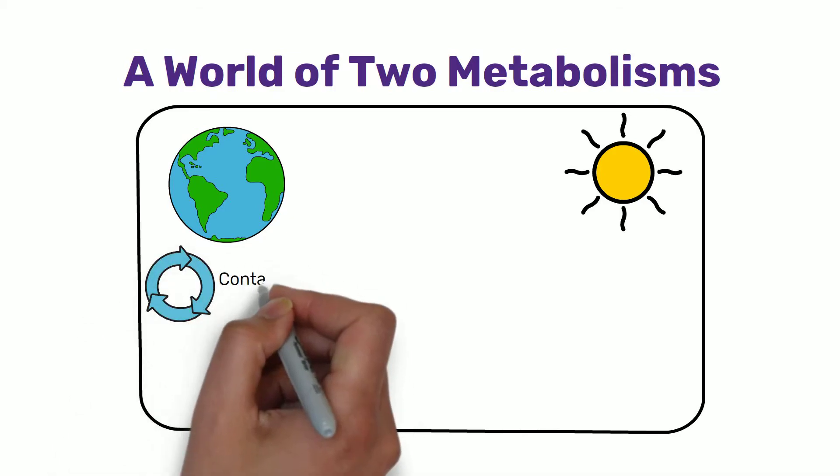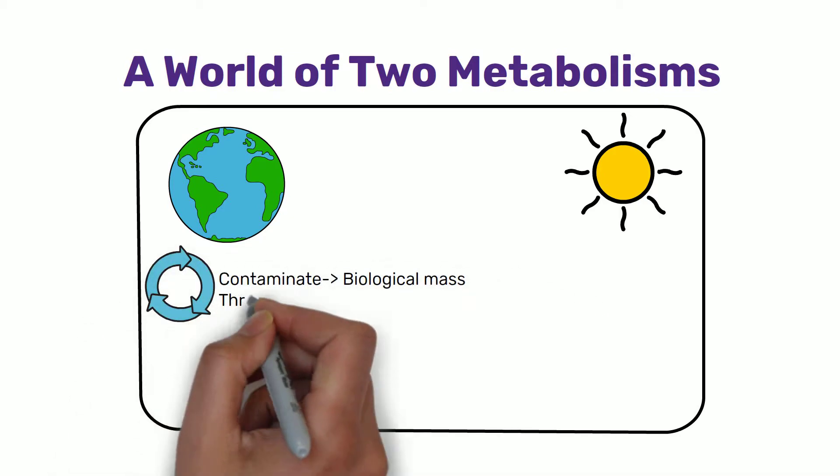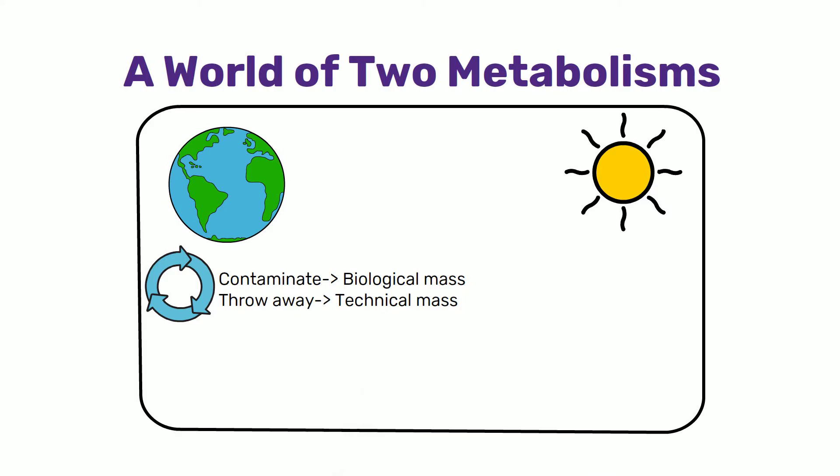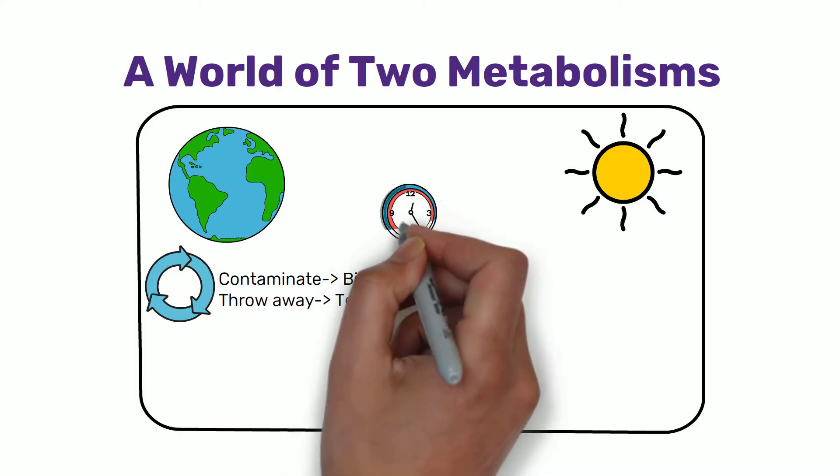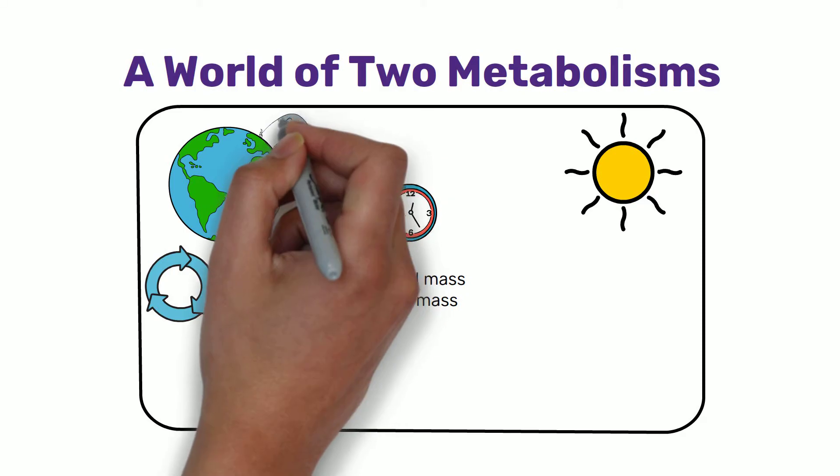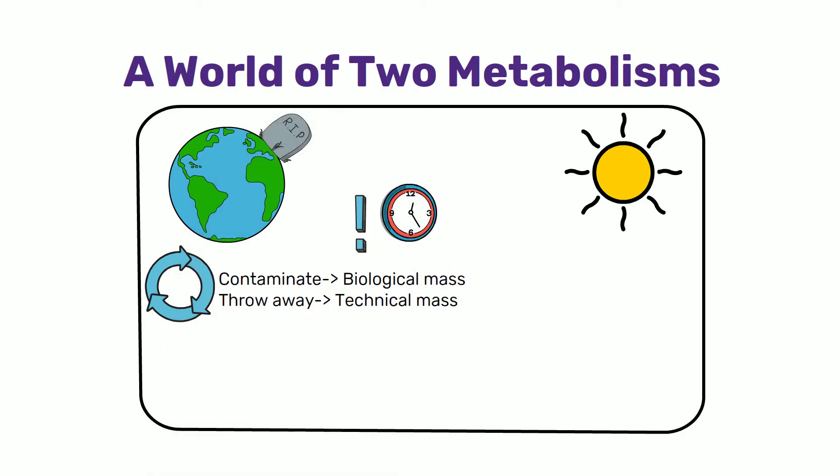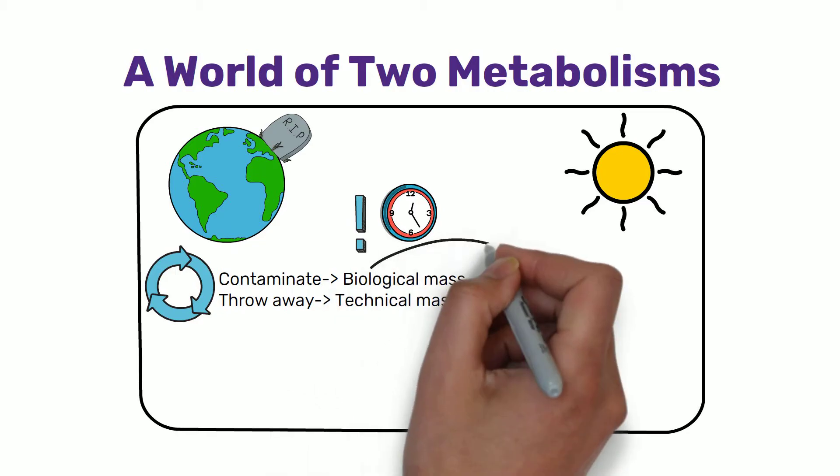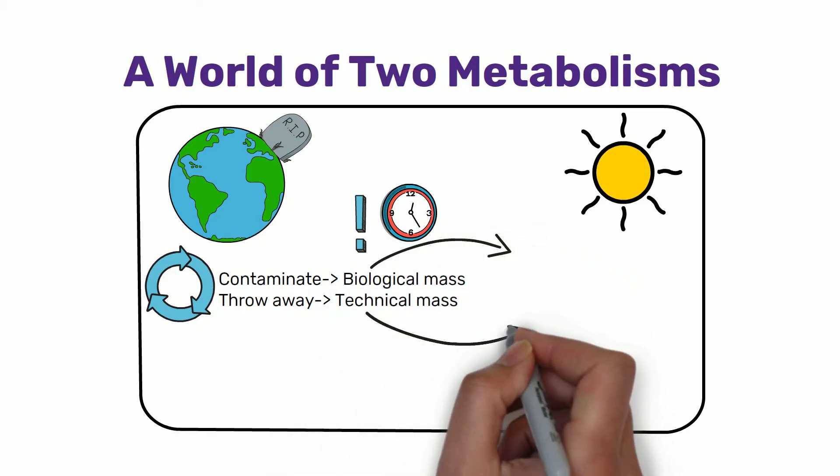If our systems contaminate earth's biological mass and continue to throw away technical materials, we will indeed live in a world of limits, and the earth will literally become a grave. As already mentioned, there are two discrete metabolisms on the planet. The first is the biological metabolism and the second is the technical.